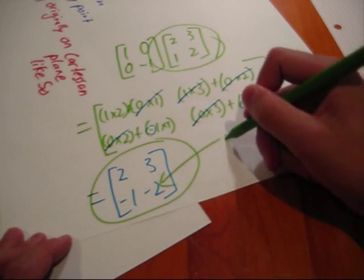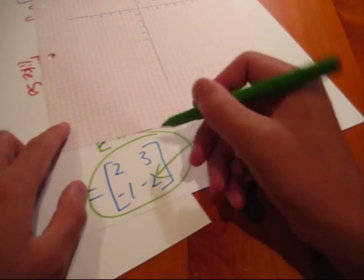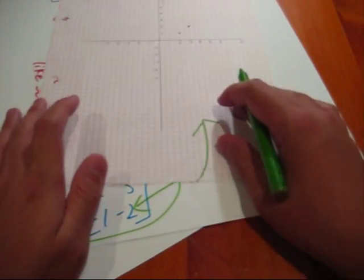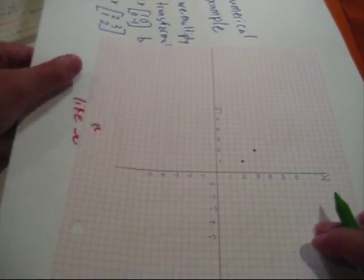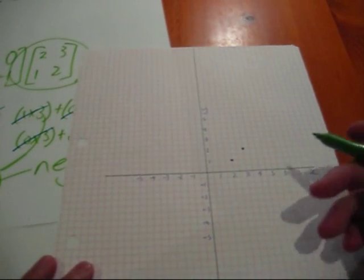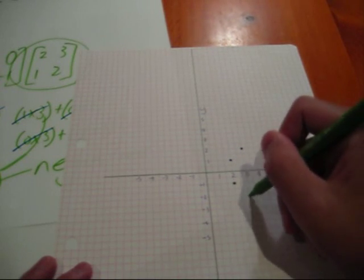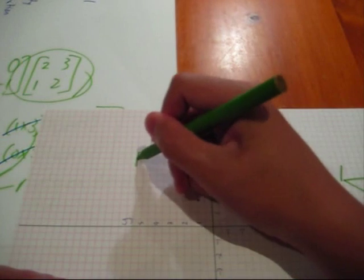As you can see, that was what it was originally, and now what it is after it's been multiplied, the transformation matrix. Now, on the Cartesian plane, it is like so. It has been reflected on the x-axis.